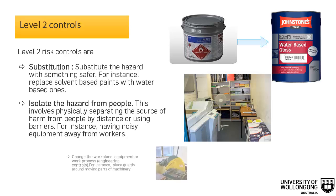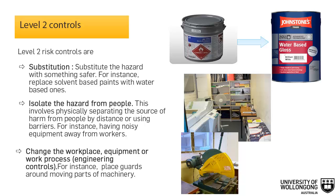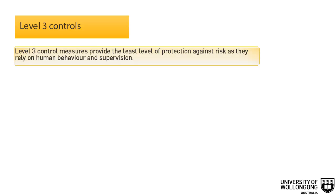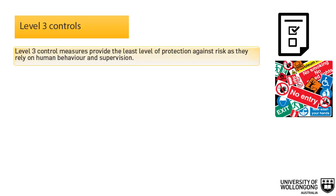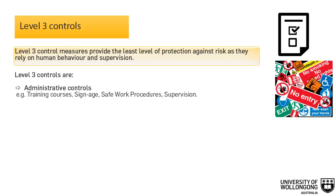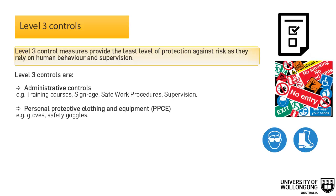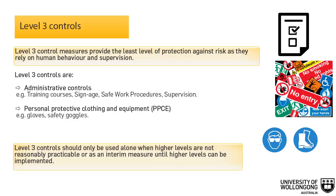The next level of control is to change the workplace, equipment, or work process — for instance, placing guards around moving parts of machinery. Level 3 control measures provide the least level of protection against risk as they rely on human behavior and supervision. These include administrative controls, such as developing procedures on how to operate machinery safely, and the use of personal protective clothing or equipment. Level 3 controls should only be used alone when higher levels are not reasonably practicable, or as an interim measure until higher levels can be implemented.